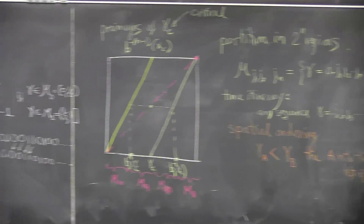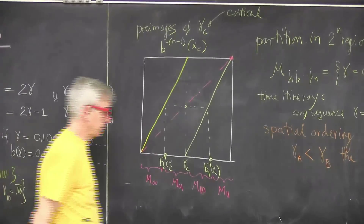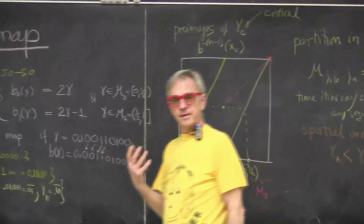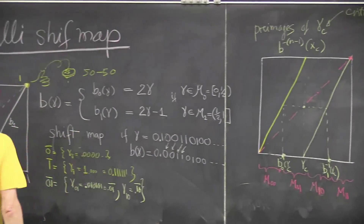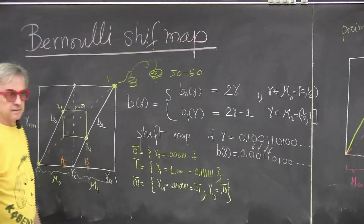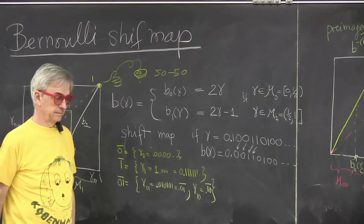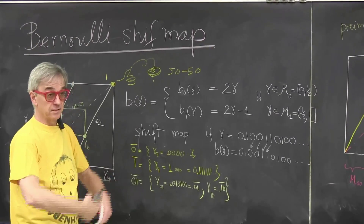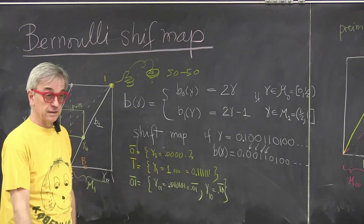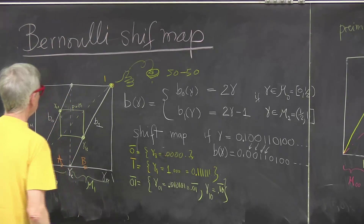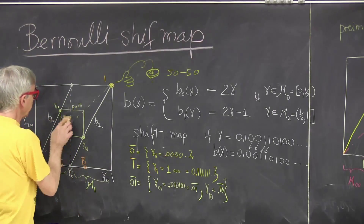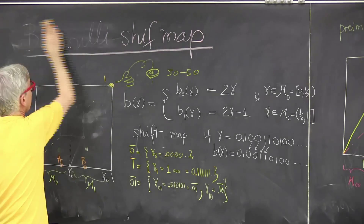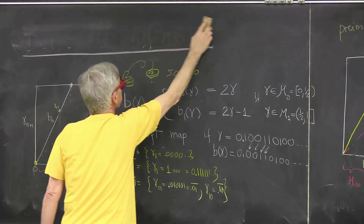What's not nice about this map, from our point of view, is that in the systems that we have been studying, we never encounter this thing. We're interested in dynamics — things get stretched and folded, as we saw in Ressler. So the maps that we actually saw were of different structure, and they're called unimodal maps.